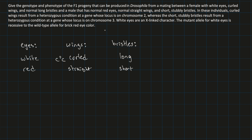Short stubby bristles also result from a heterozygous condition, at a gene whose locus is on chromosome 3 — a different chromosome, which is good. We'll give bristles the letter B, so short stubby bristles occur when you are heterozygous: B⁺ and B.